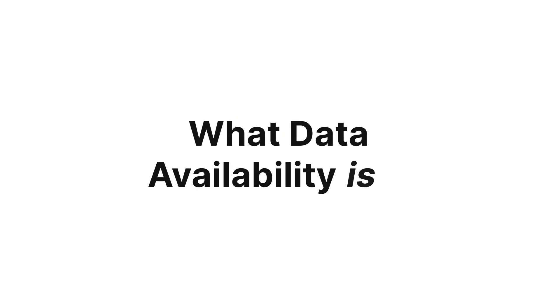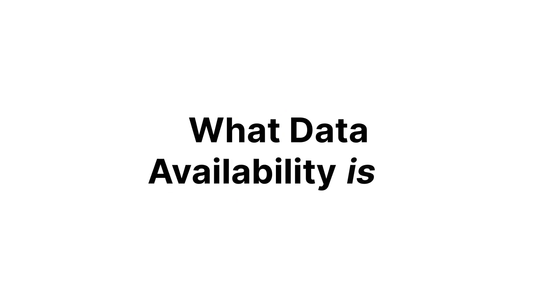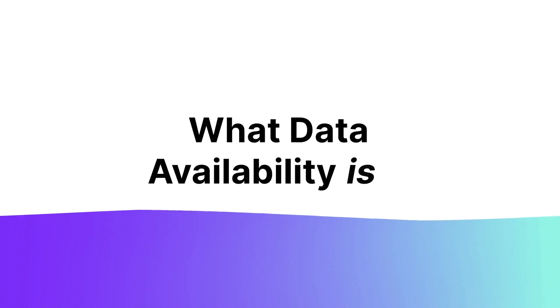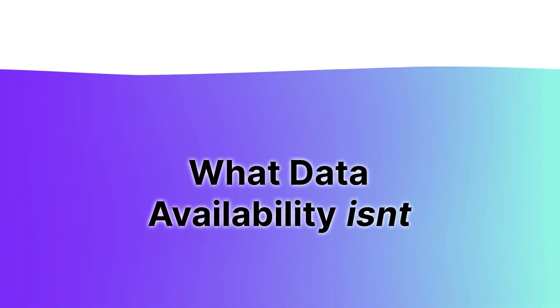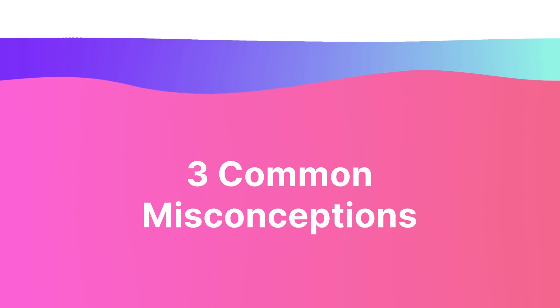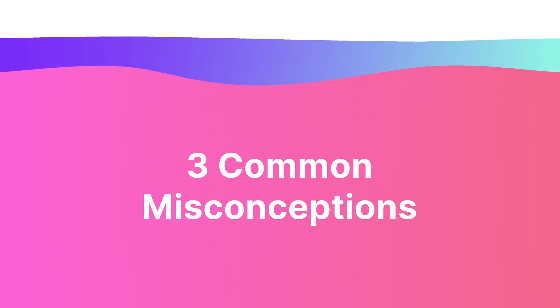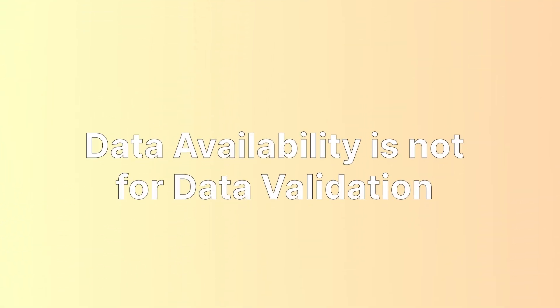To find out what data availability is, let's first understand what it isn't and three common misconceptions. First, data availability is not for data validation. Data availability is for making sure that data is available, but for modular blockchains, DA layers don't actually verify if the data is accurate.